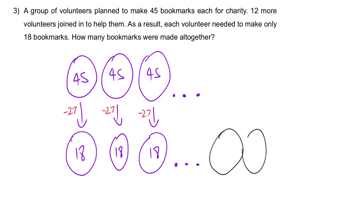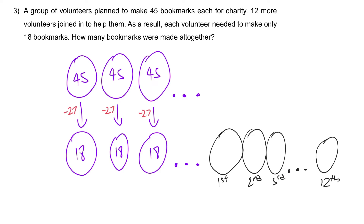So the new volunteers — one, two, three, all the way to 12 — the first new volunteer, the second, the third, all the way to the 12th new volunteer, each of them is going to do 18. Now all their bookmark tasks — where do they come from? They have to come from all those 27 reductions. All the initial volunteers gather all their 27 bookmarks and pass the workload to the 12 of them.